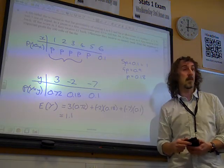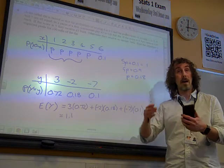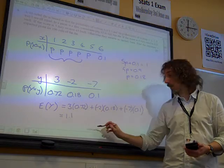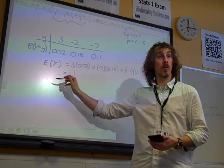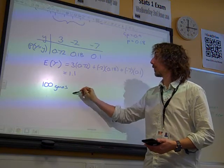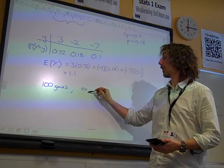Now, that means his expected profit per round of the game is £1.10. So, his total expected profit for 100 games is £110.